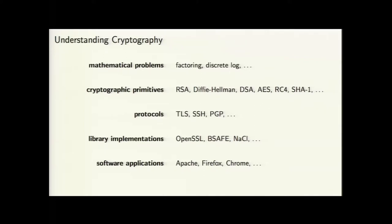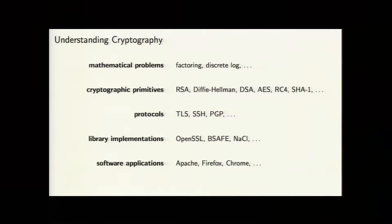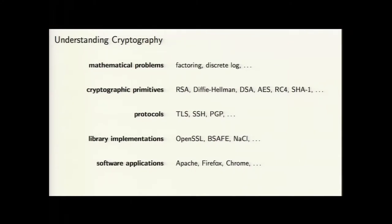Taking our inspiration from the NSA, here's a way to understand cryptography — just to get our bearings. At the top we have mathematical problems like factoring and discrete log. From those you construct cryptographic primitives like RSA and Diffie-Hellman. You use those in protocols like TLS, SSH, and PGP. Those are implemented in libraries like OpenSSL and BSAFE, which are used in software applications that users actually use.